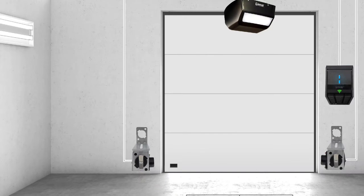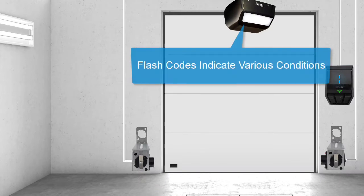If your Linear smart garage door opener system is not functioning correctly, you can use your operator light's flash codes to determine the condition causing the operation problem.